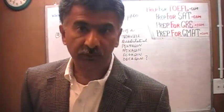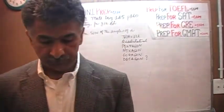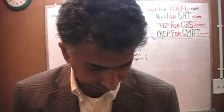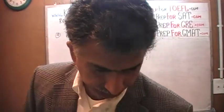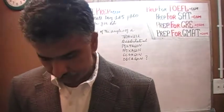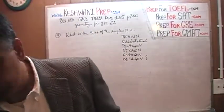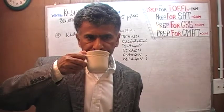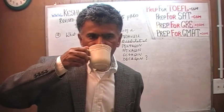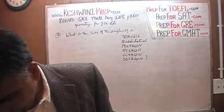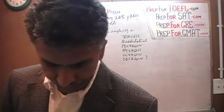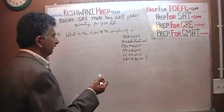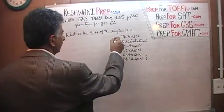I could just throw the formula at you and ask you to memorize it, but as you know by now, that's not what we do. If that's what you want, there are plenty of videos on YouTube where you will find precisely that. So what is the sum of the angles of a triangle? Of course, we know that — it's very simple. The sum of the angles of a triangle is 180.